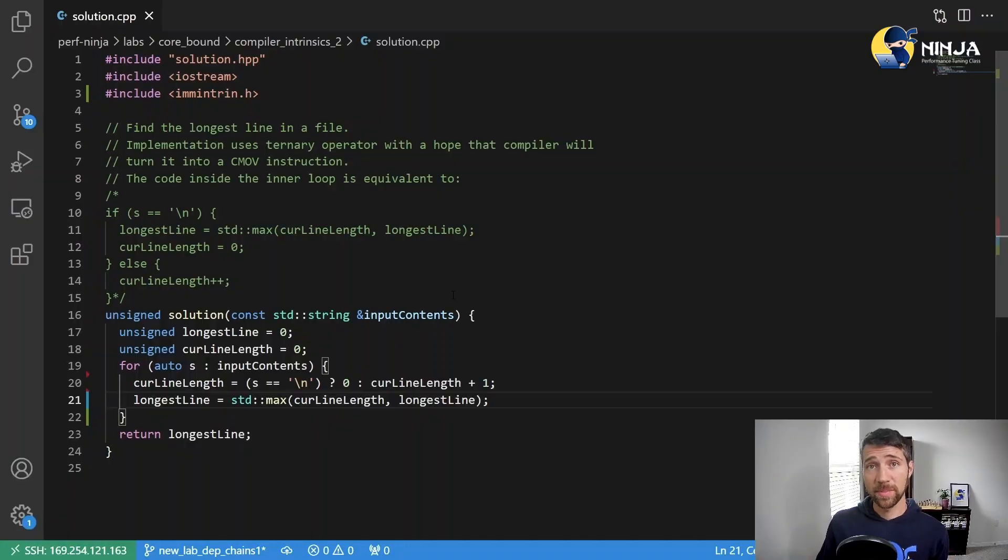The task of this lab assignment is to find the longest line in a file. And our solution function takes the contents of this file as a large string and then it just skims through its characters one by one searching for end of line characters. And then once we found the end of the line, we need to check if it is the longest. So this is what STD max is doing here.